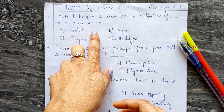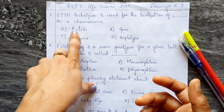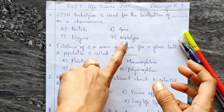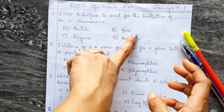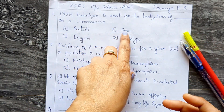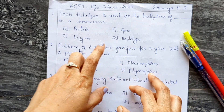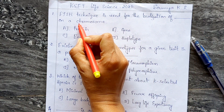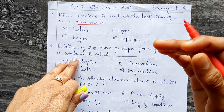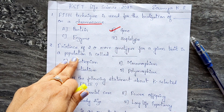The question asks what is localized on a chromosome using FISH. The options are: A) protein, B) gene, C) enzymes, D) haplotype. Haplotype is a group of genes within an organism inherited together from a single parent, derived from the word 'haploid.' Since FISH locates a specific DNA sequence, and a gene is a DNA sequence, the correct answer is B — gene.